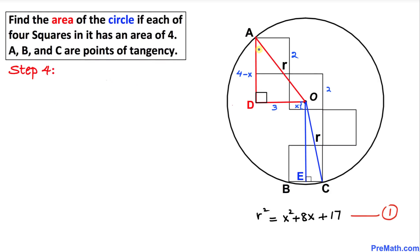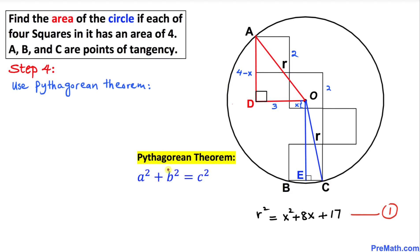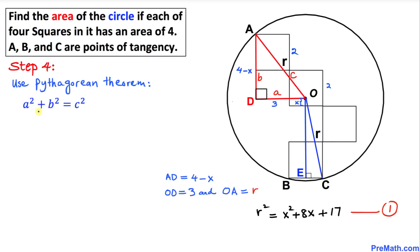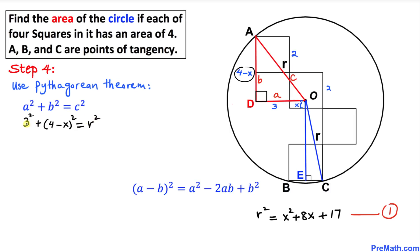We know triangle ADO is a right triangle, so we use the Pythagorean theorem again: a squared plus b squared equals c squared. Here, side OD is a, side AD is b, and the hypotenuse OA is c. Filling in: 3 squared plus (4 minus x) squared equals r squared.